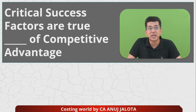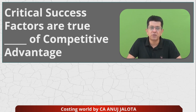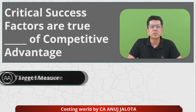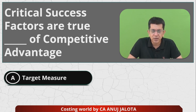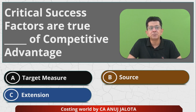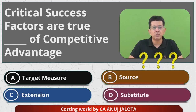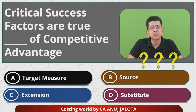Let's see the MCQ. Critical success factors are the true ___ of competitive advantage. Four options: A — Target measure, B — Source, C — Extension, D — Substitute. If you know the answer, this is the time to comment. Pause the video and comment please.